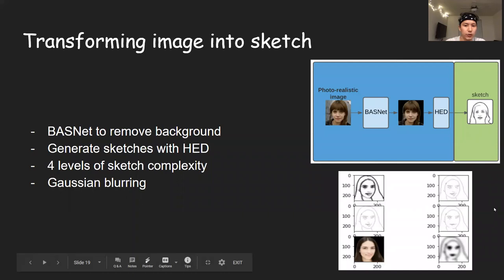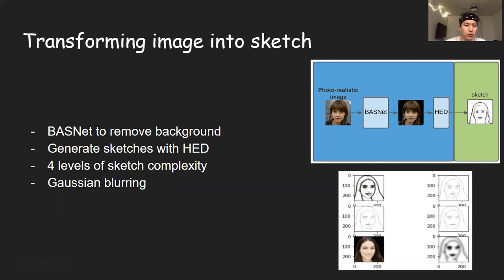On this step, we transform the image into a sketch. There are two phases: first, we use the BaseNet model to remove the background from the image to prevent extra noise. Then we use the HED method to generate sketches, with four different levels of complexity as shown in the bottom right corner. We also applied Gaussian blurring, and the whole process is similar to what was used in the SketchGAN paper.